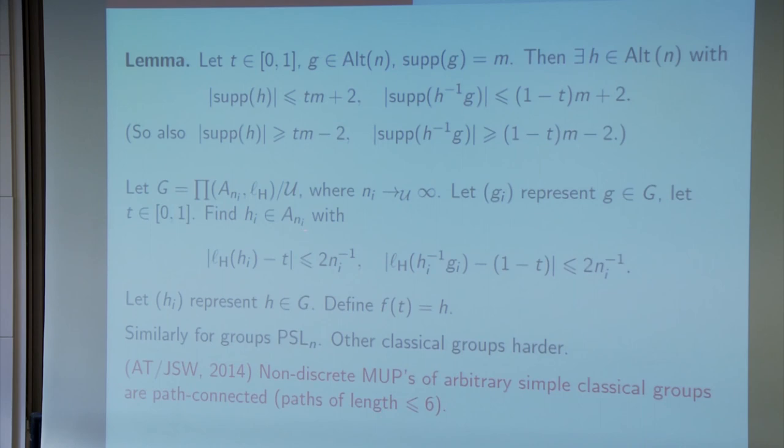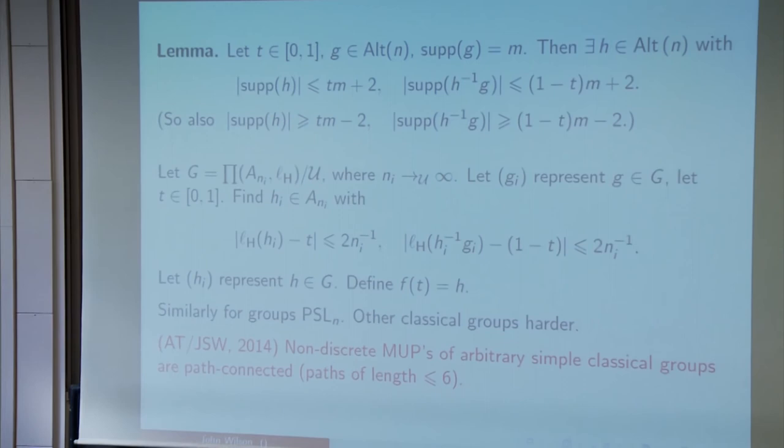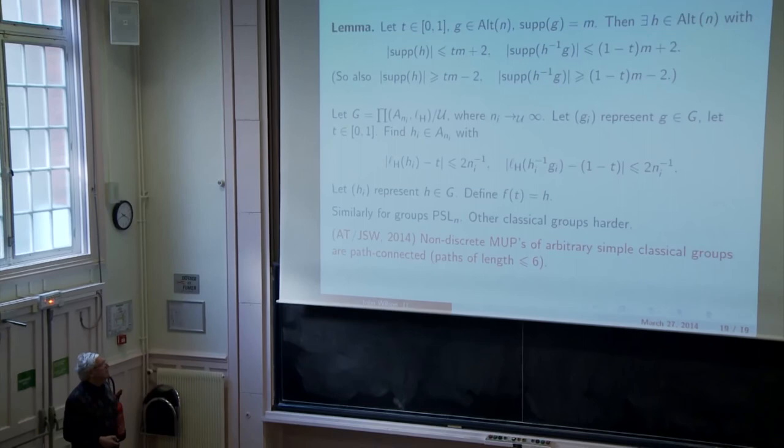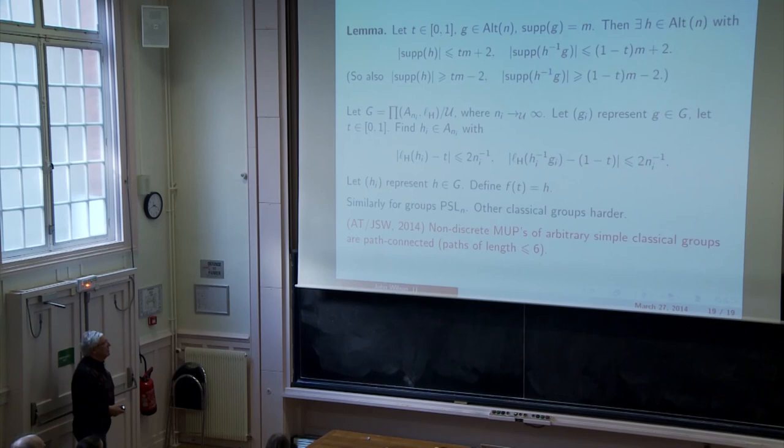And now we let this sequence hi represent the element h of Ḡ. Let h be the thing represented by this sequence and justifying f(t) equals h. And I think you can probably see that that does the job. Yes, well, it's a little bit harder for projective special linear groups, but one can use essentially the same policy, the same procedure. It's very much harder for the other classical groups. And we can't do it yet. That's something for the autumn, I think. Very much harder.